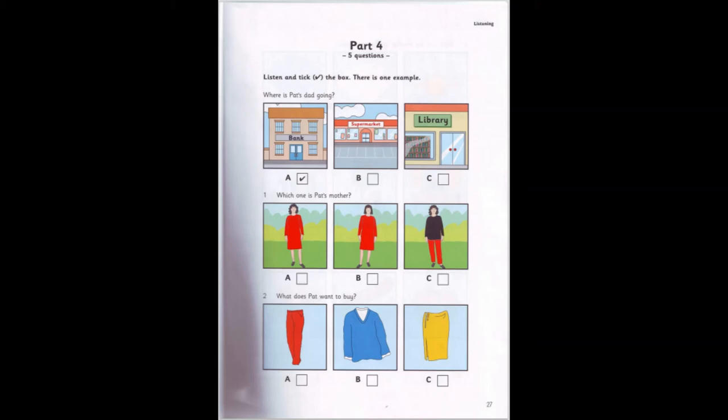1. Which one is Pat's mother? Is your mother here, Pat? Yes, she's in the garden with my aunts. Has your mother got straight hair? No, her hair is curly. Is she the one in the red dress? No, she's wearing trousers today.